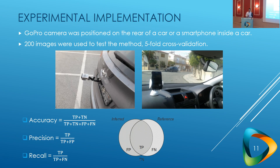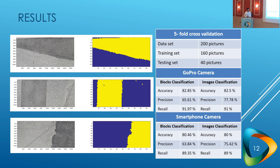We used a GoPro camera positioned on the back of a car and a smartphone camera positioned inside the car. We collected 200 images for each method from the same road sectors so that we can compare the two procedures. We used standard computer vision metrics: accuracy, precision, and recall, which are based on true positives, false positives, true negatives, and false negatives.